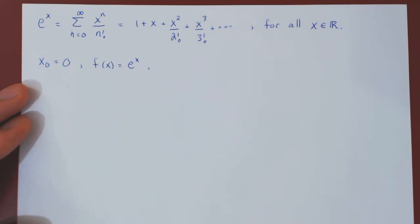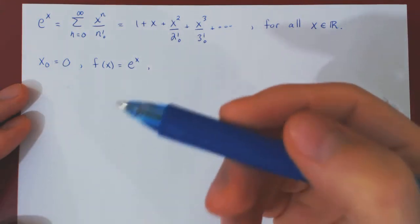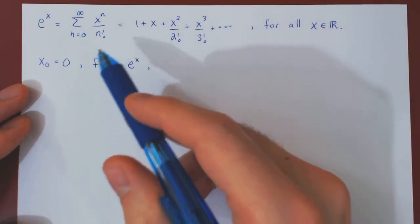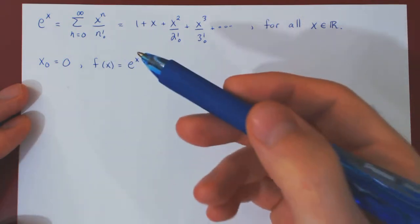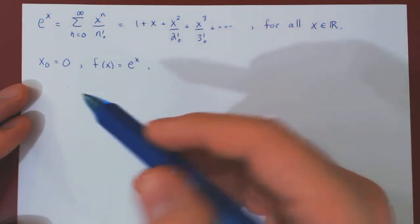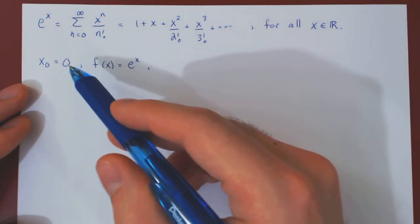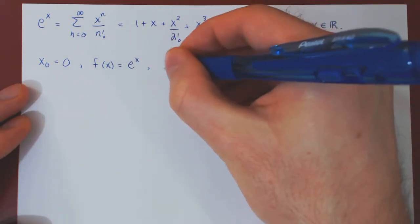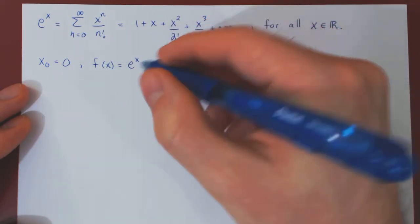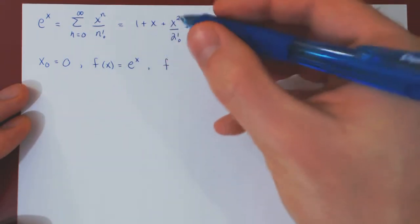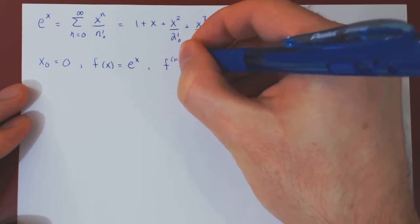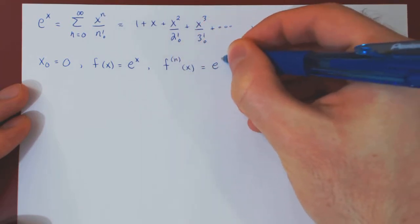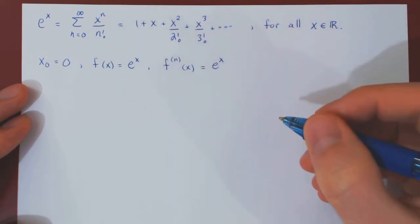The assumption, if we want to apply Taylor's theorem, is that the function we're dealing with is infinitely differentiable around the center of the expansion. Well, this is the case — the derivative of e to the x is itself, so all higher derivatives of f at x are the same, namely e to the x.